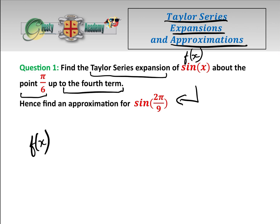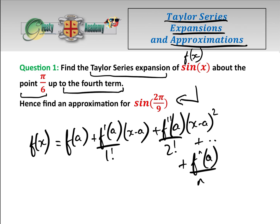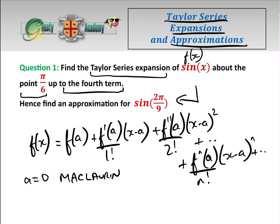Let's look at the Taylor series expansion: f of x equals f of a, plus f dashed of a over 1 factorial times x minus a, plus f double-dashed of a over 2 factorial times x minus a squared, and so on, plus the nth derivative of a over n factorial times x minus a to the n. Now if we put in the point a equals 0 then we get the Maclaurin series; for any other point it is the Taylor series.